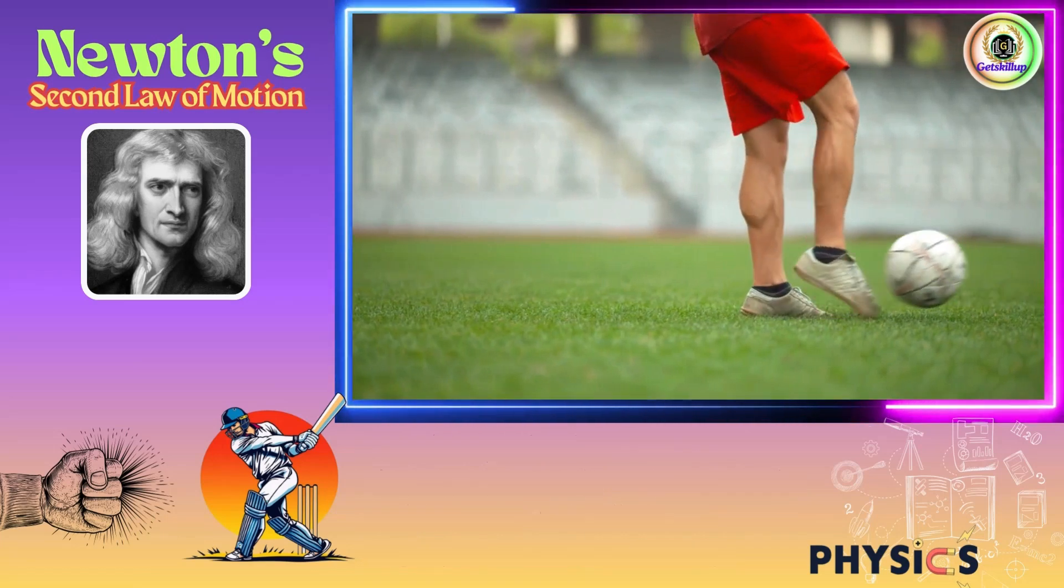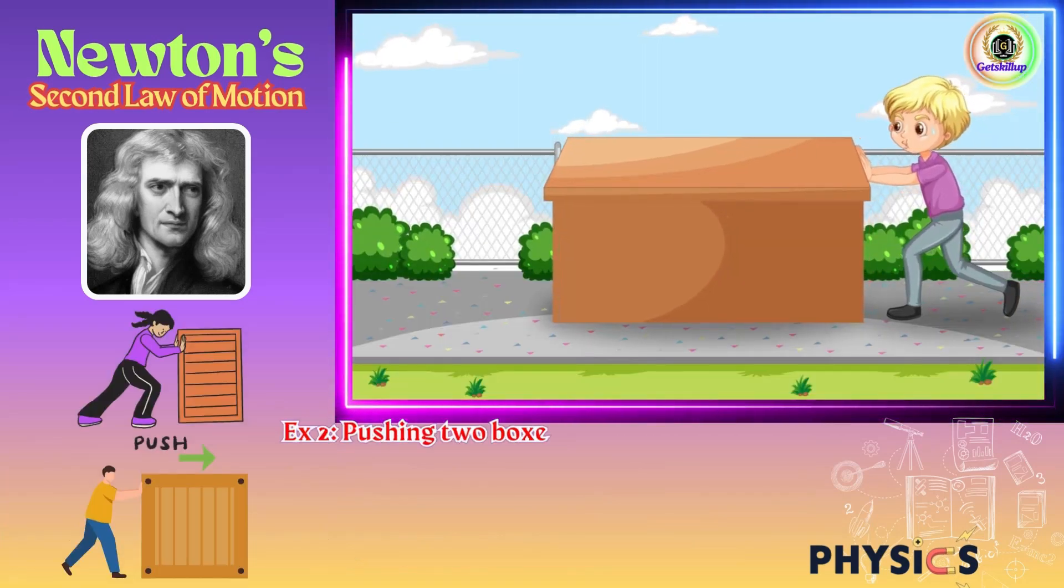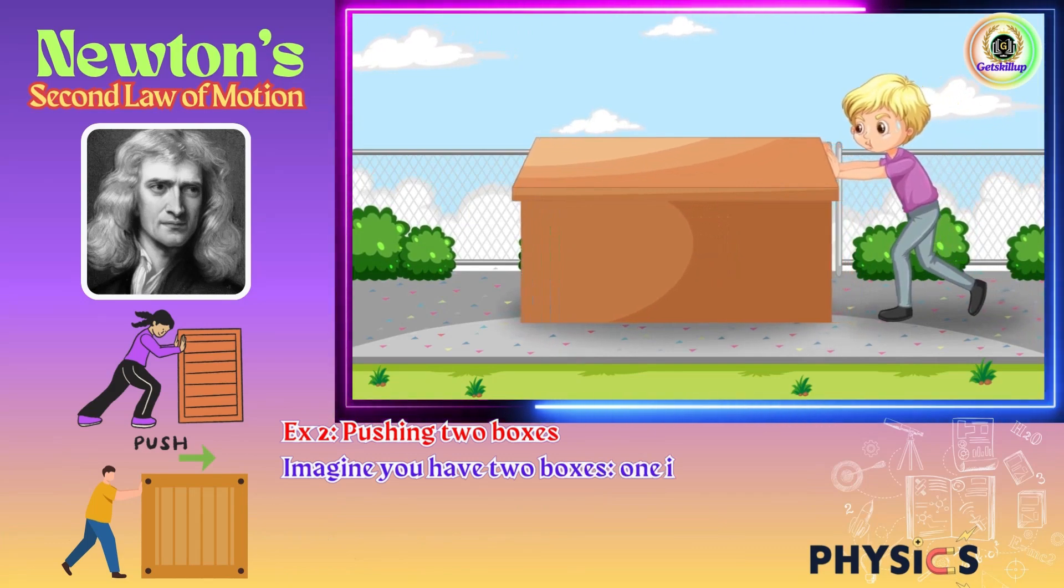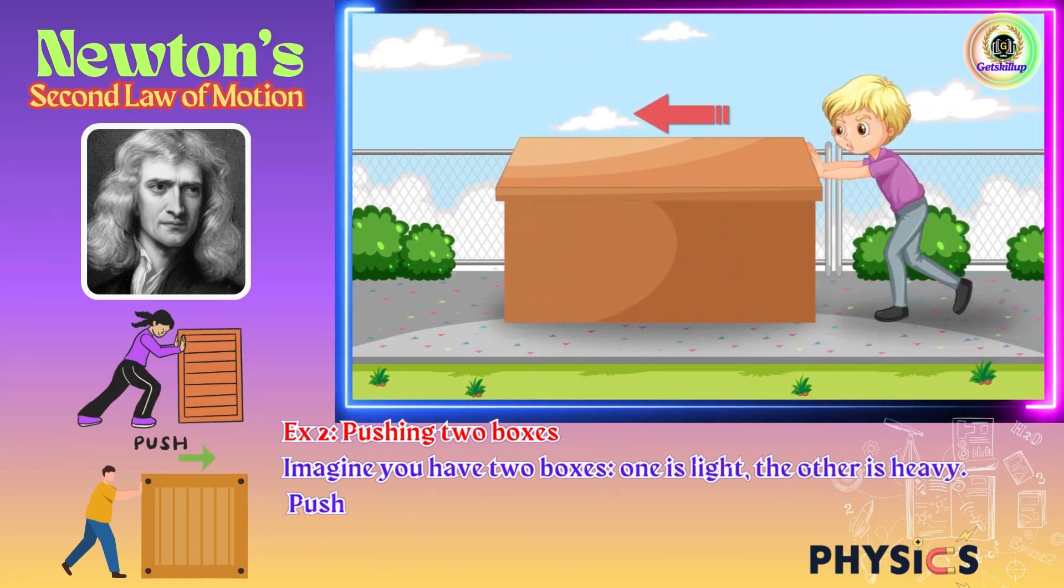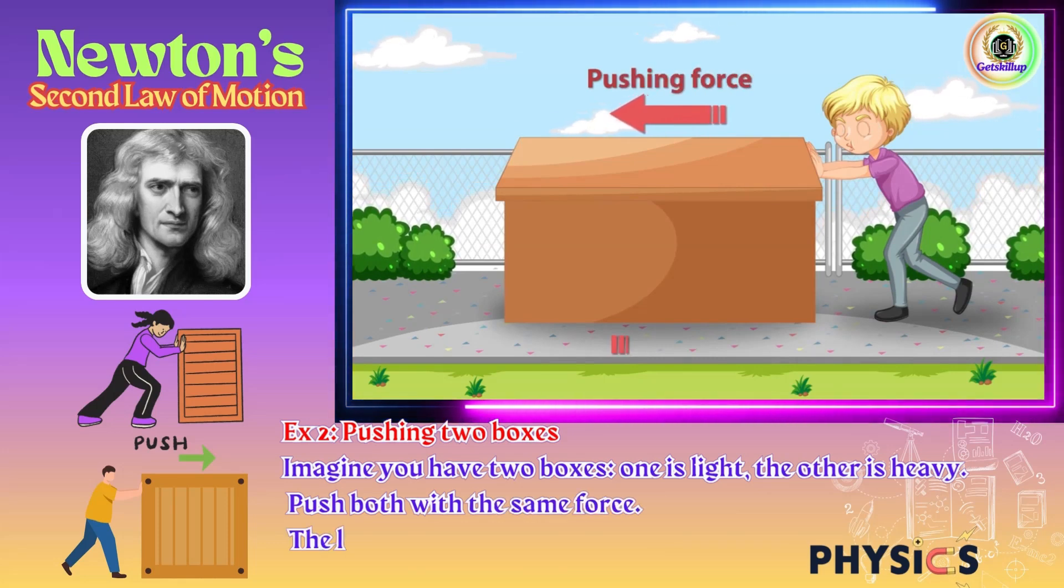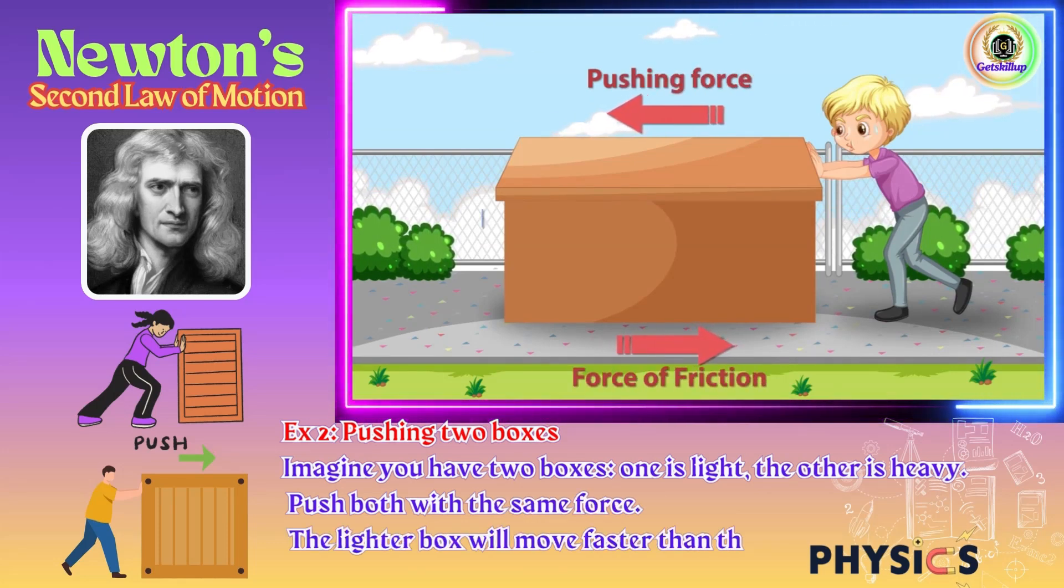Example 2: Pushing two boxes. Imagine you have two boxes—one is light, the other is heavy. Push both with the same force. The lighter box will move faster than the heavier one. Less mass, more acceleration.